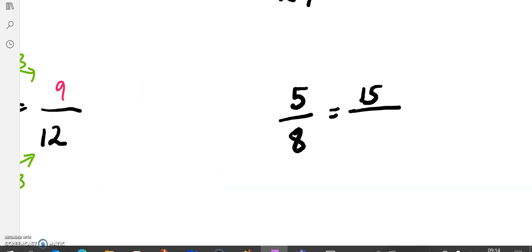We have a look at this one here. 5 eighths is equal to 15 over something. We look for a multiplication relationship. So here we're once again multiplying by 3. So I'll need to multiply by 3 here. 8 times 3 would give us 24. 5 eighths is the exact same as 15 twenty-fourths. This idea of equivalence is one of the biggest ideas when we look at this first fractions topic.